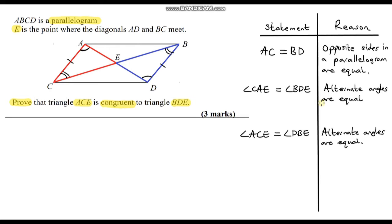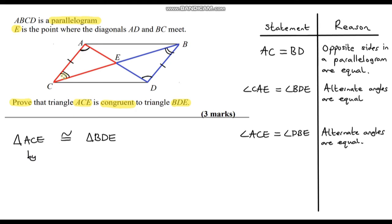Now we've got three bits of information. Do we have the required information to prove these two triangles are congruent? Well, we've got ASA — angle side angle — and ASA is one of our congruency axioms. So yes, we do. Triangle ACE is congruent to triangle BDE, and that would be by ASA: angle, side, angle. And we are done.